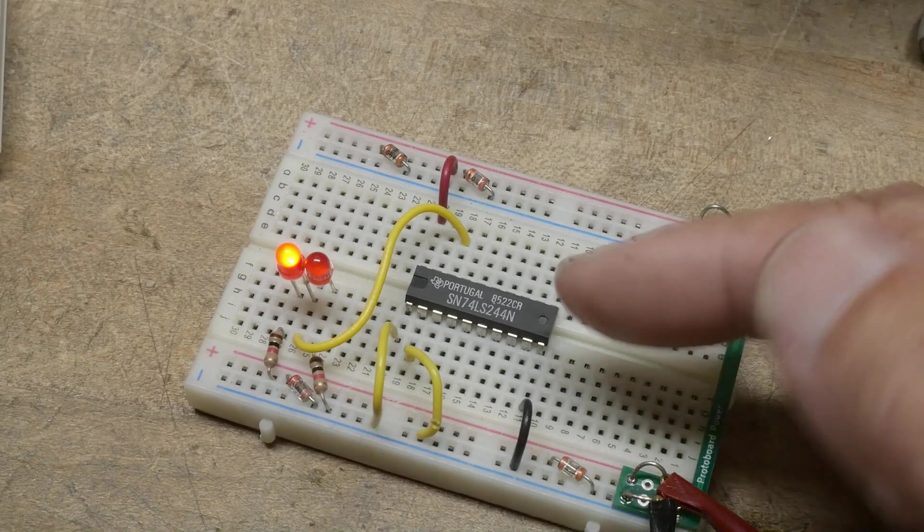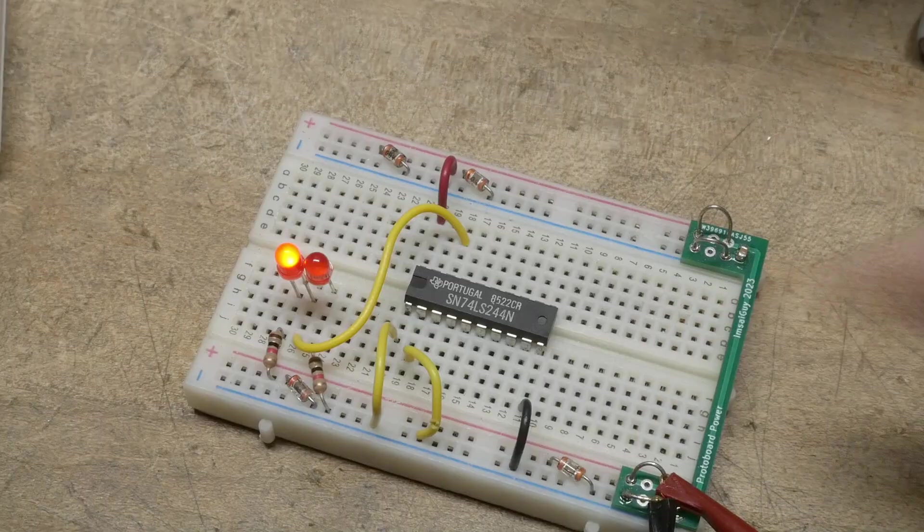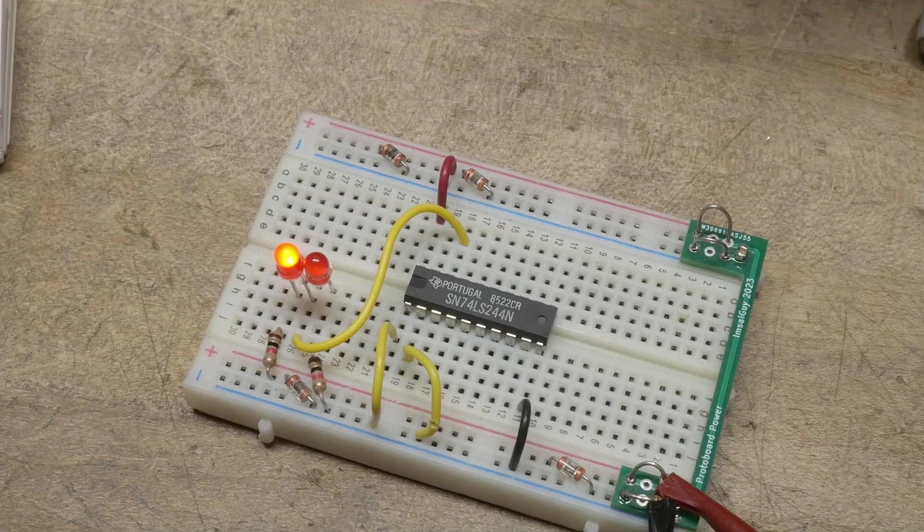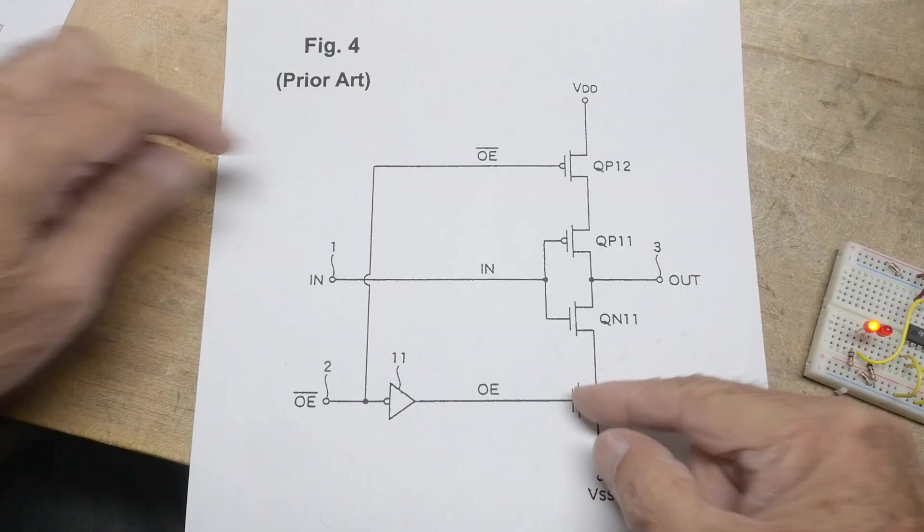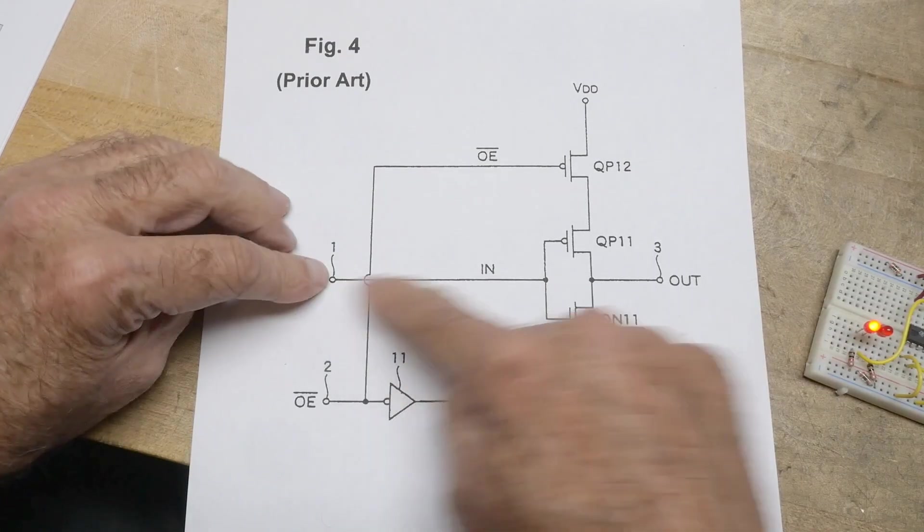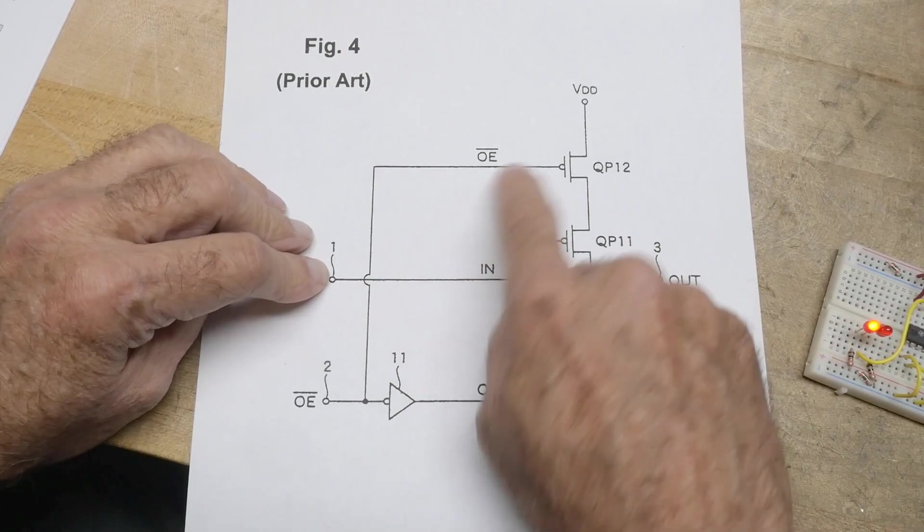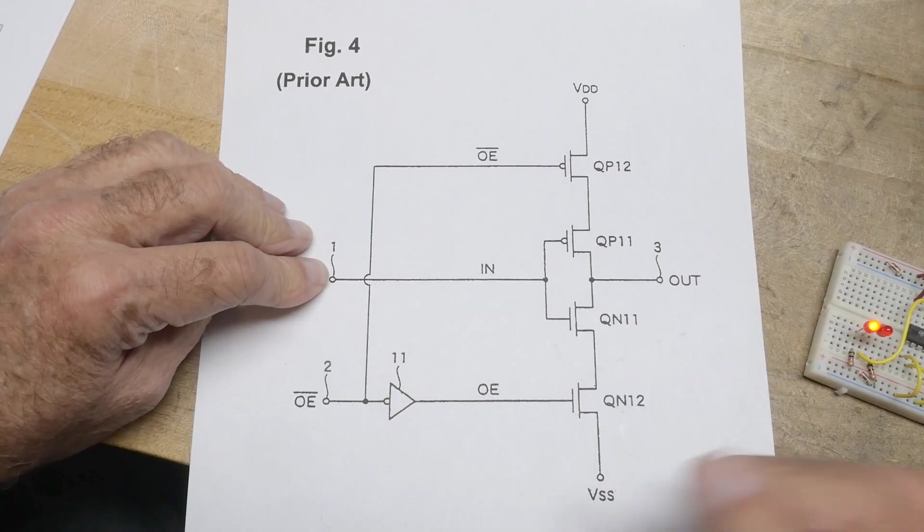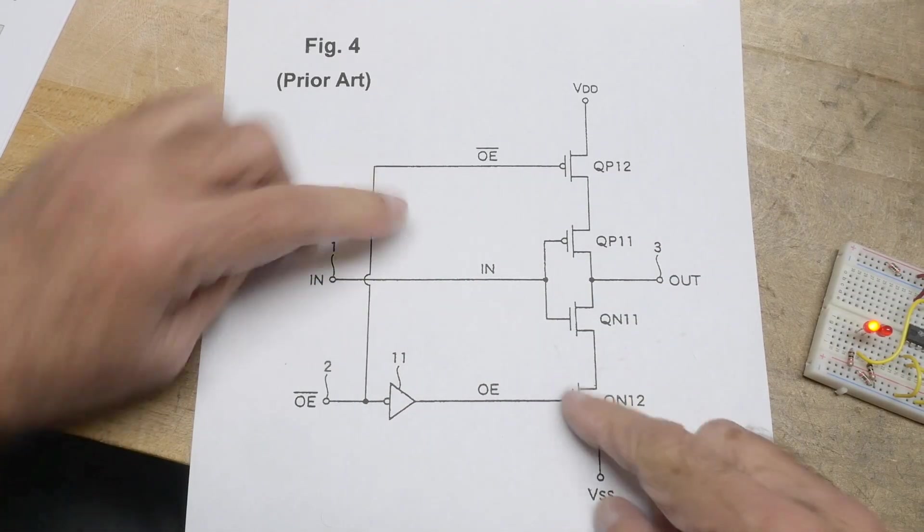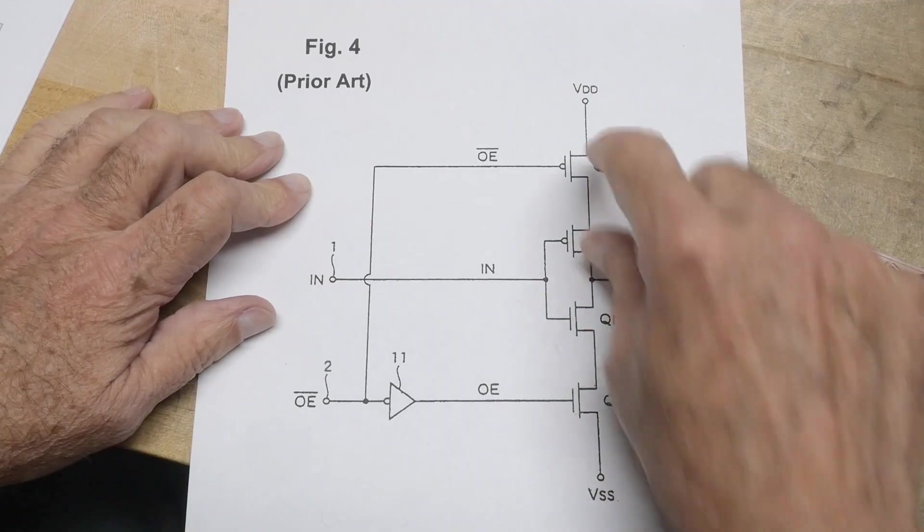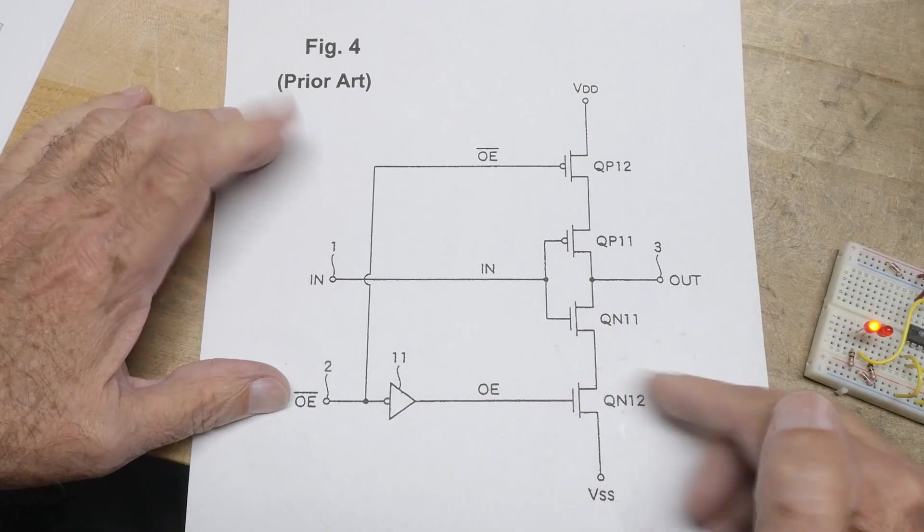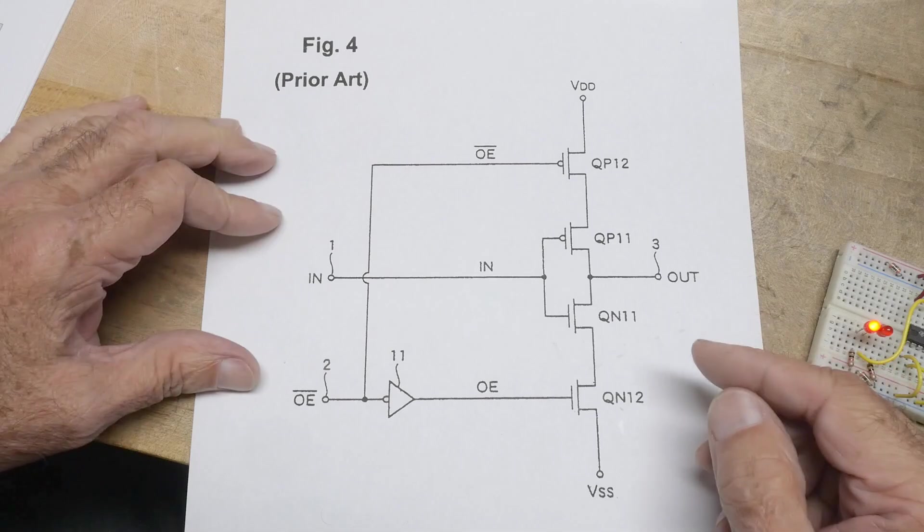This is a 74LS244 tri-state buffer, very common. Now, how would you accomplish such a thing? Well, here's a really simple idea. That is, you know, here's your inverter, and you can just disconnect the VCC or just disconnect the ground, and you do that with these two. Now, you're going to have a lot of burden voltage. You're going to have a whole bunch of voltage drops here, so while this works, it might not be the most efficient.